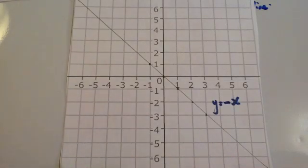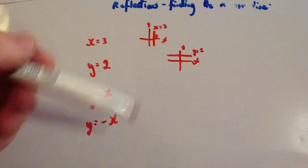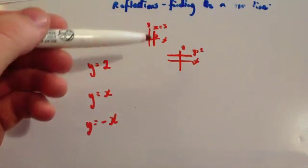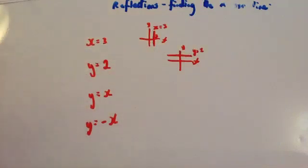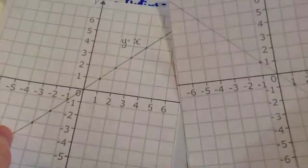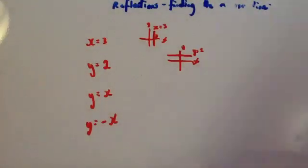In a GCSE question, whenever they ask you to find the equation of the mirror line, it's going to be one of four types: x equals a number, y equals a number — giving a vertical or horizontal line — or one of the two diagonal graphs, y equals x or y equals minus x.